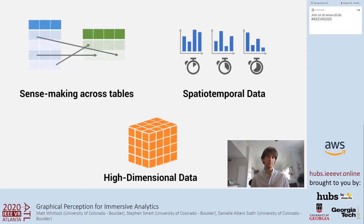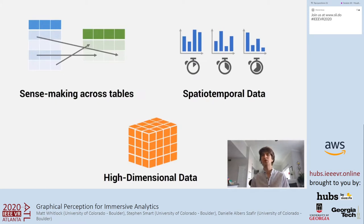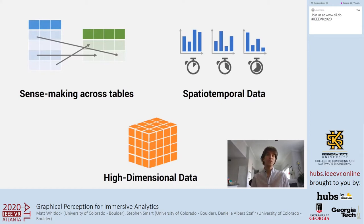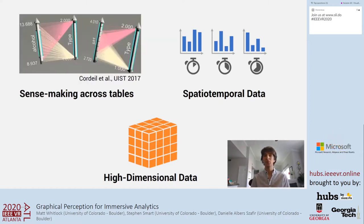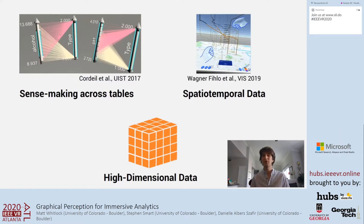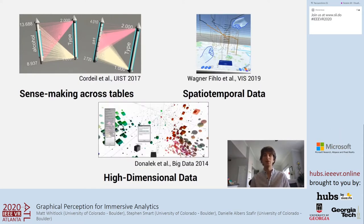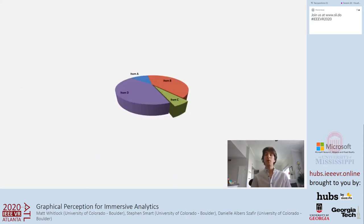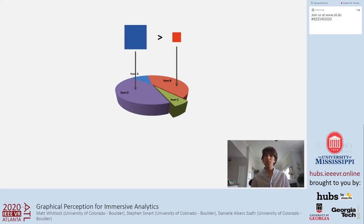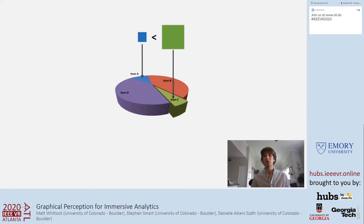Prior research on immersive analytics has identified benefits to using AR and VR for data visualization, including sense making across tables, use of spatiotemporal data, and use of high dimensional data. However, there are some instances where we can deceive viewers just by using 3D in our visualizations. For example, the purple region looks a lot larger than the red one, and the green region looks much larger than the blue one when a pie chart is projected in 3D.